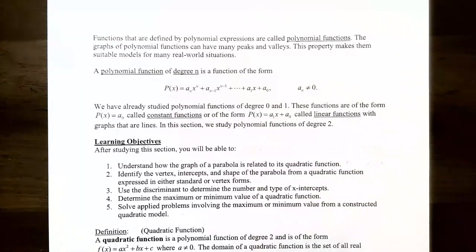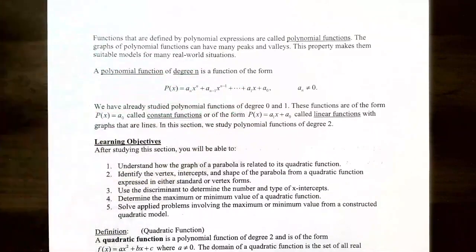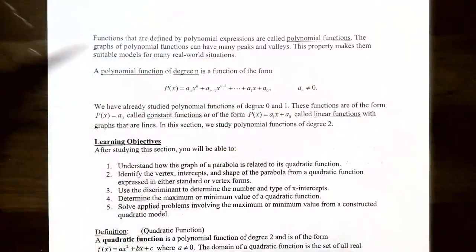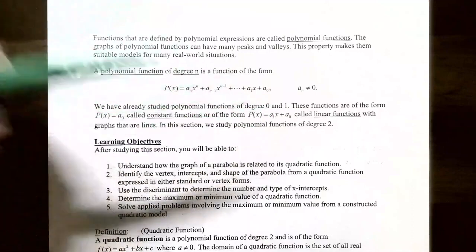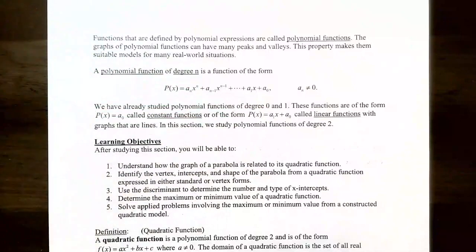We've already seen two types of polynomial functions. A degree-0 polynomial is just a constant term a_0, called a constant function. A degree-1 polynomial has the form p(x) = a_1·x + a_0, which looks like y = mx + b, where a_1 is the slope and a_0 is the y-intercept. This is called a linear function because x is raised to the first power.